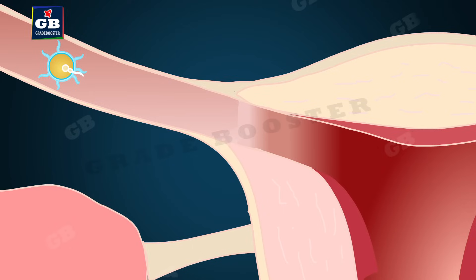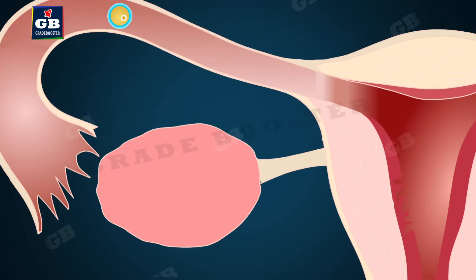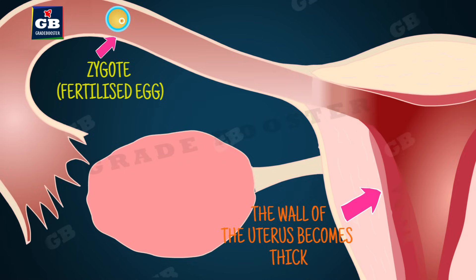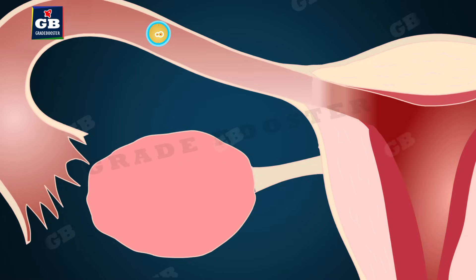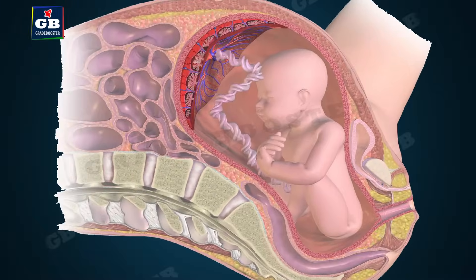The hormones secreted by the ovaries prepare the uterus to receive and nurture the growing embryo. The walls of the uterus become thick and richly supplied with blood to nourish the growing embryo. The fertilized egg, the zygote, gets implanted in the lining of the uterus and starts dividing.